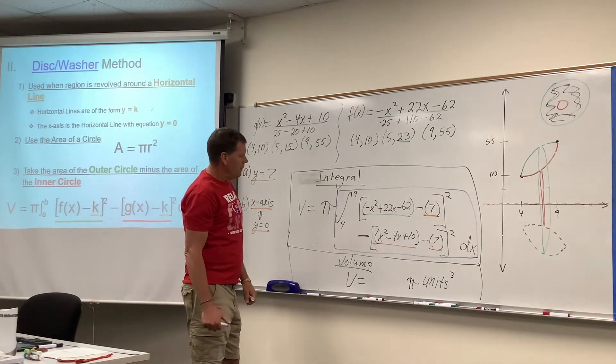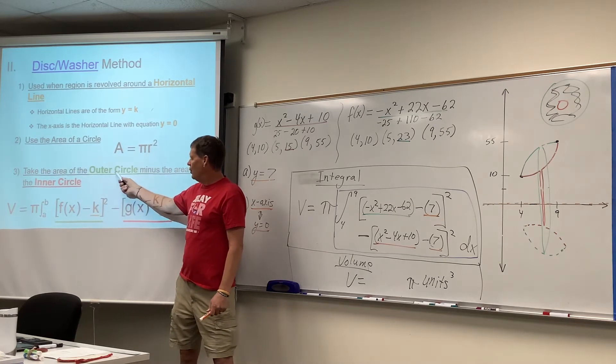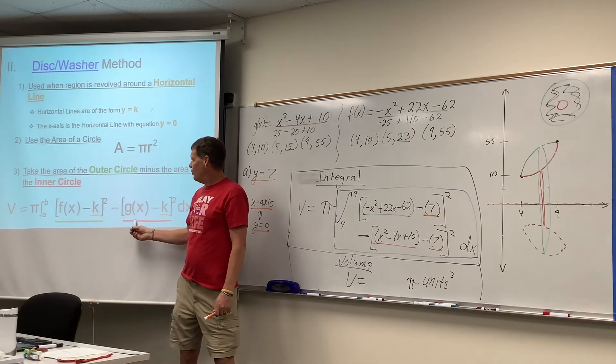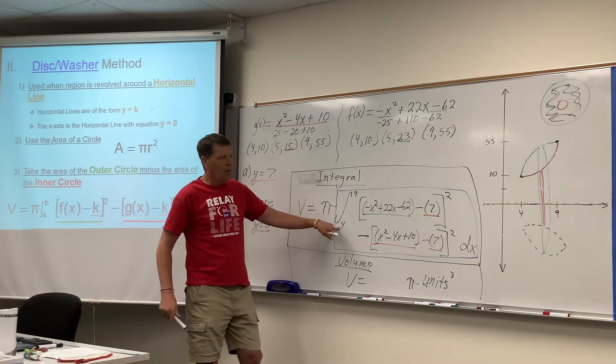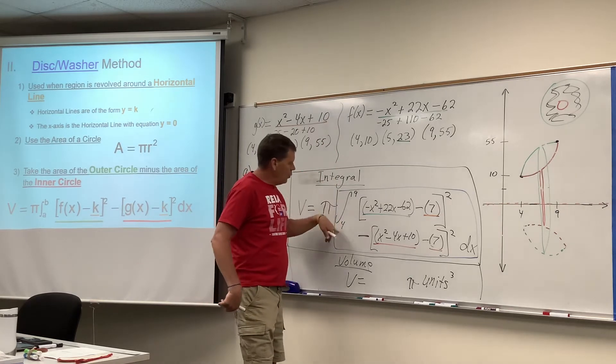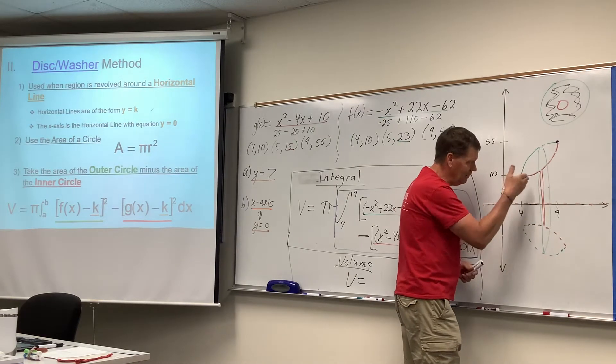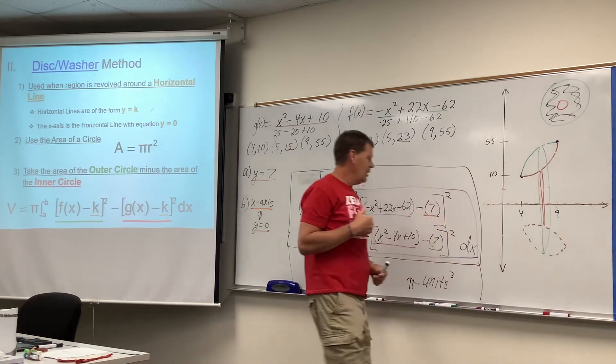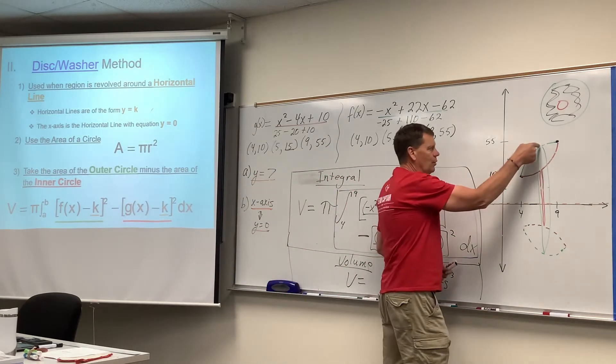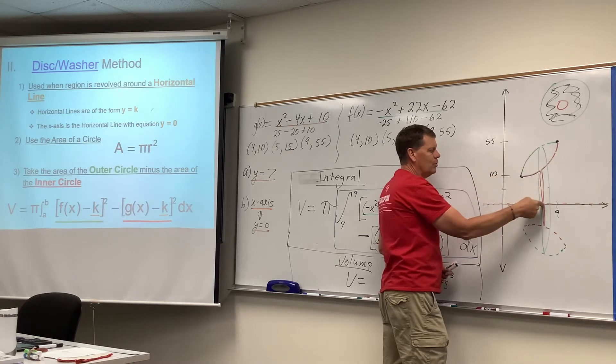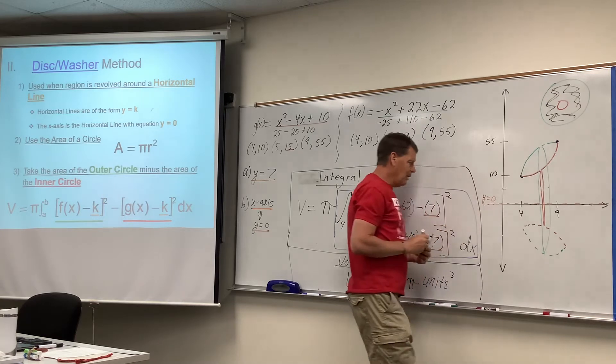Well, we're still using the area of a circle, pi r squared. We're going to take the area of the outside green one minus the area of the inside red one, pi r squared. We've got our pi out here. We're going to add up all the washers from 4 to 9. There's an infinite number of them. I've only drawn one of them, right? It's an infinite number of cross-sections. And wouldn't the radius of the outside green circle be the distance from the green curve down to the axis of revolution, which I want to remind you is y equals 0 this time?